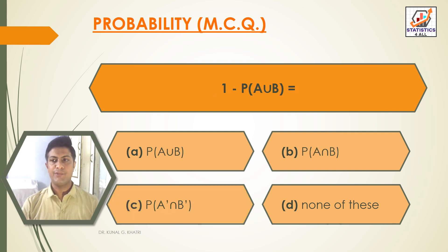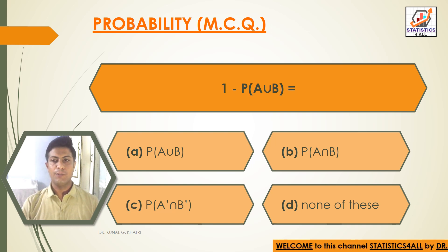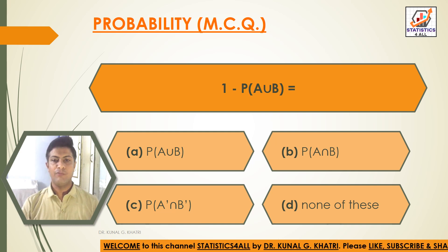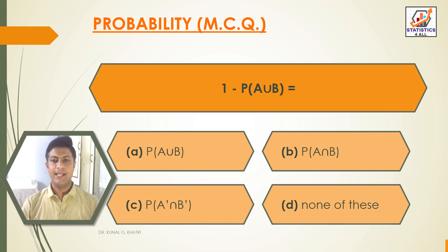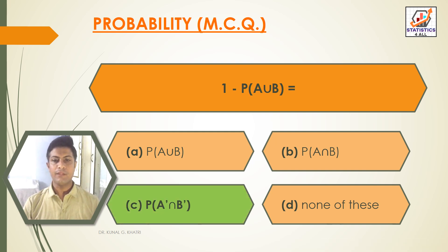Question 19: 1 − P(A∪B) equals? Option A: P(A∪B). Option B: P(A∩B). Option C: P(A'∩B'). Option D: None of these. Answer: Option C — P(A'∩B') = 1 − P(A∪B).